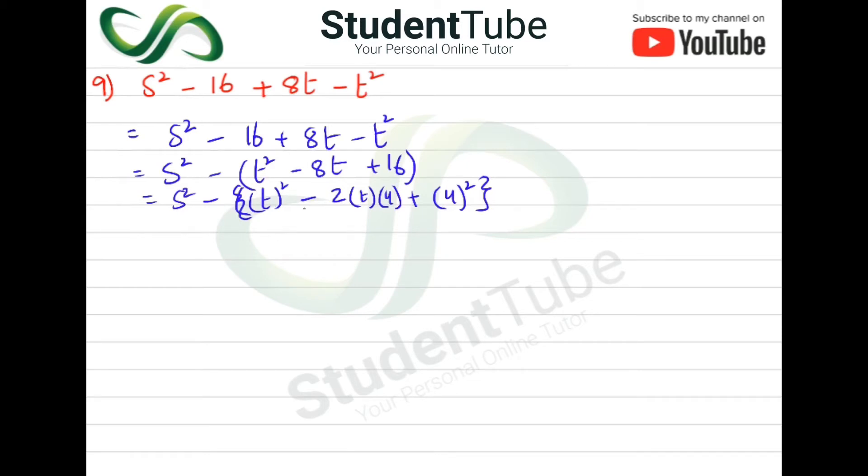Now if we see the whole value in this bracket, here the formula is applied: a plus - sorry - a minus, because minus is plus. So a minus b whole square is equal to a²-2ab plus b².